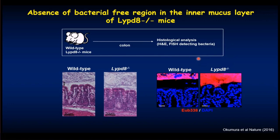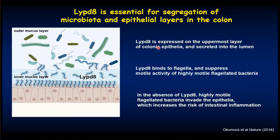To summarize the LYPD-8 studies: LYPD-8 is expressed on the uppermost layer of the colonic epithelial cells and secreted into the colonic lumen. LYPD-8 binds to the flagella of flagellated bacteria. These flagellated bacteria are highly motile, and LYPD-8 suppresses their motile activity. In the absence of LYPD-8, highly motile flagellated bacteria invade into the epithelial regions, increasing the risk of intestinal inflammation. Thus, LYPD-8 is essential for the separation of microbiota and the epithelial layers, and important for the maintenance of intestinal homeostasis.